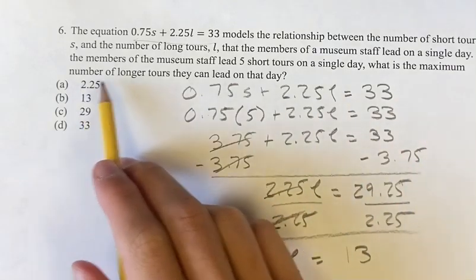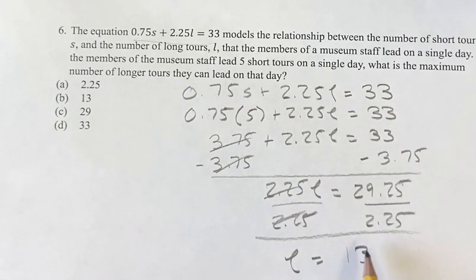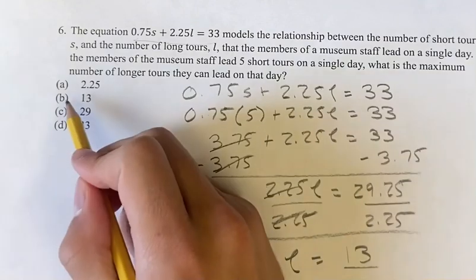So what is the maximum number of longer tours that they would be able to lead on that day? Your answer is going to be 13, which lines up with B.